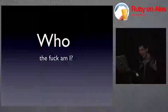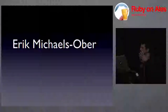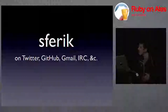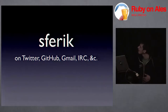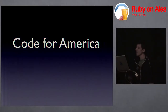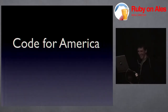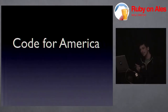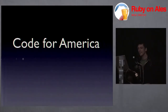Who am I? This is my given name, but you might know me on the internet as SFEric — Twitter, GitHub, Gmail, IRC, et cetera. I'm currently in the middle of a one-year fellowship at a non-profit organization called Code for America. We're working to make government more efficient and transparent and open. It's basically the best thing ever. I get paid to write open source software all day in Ruby.